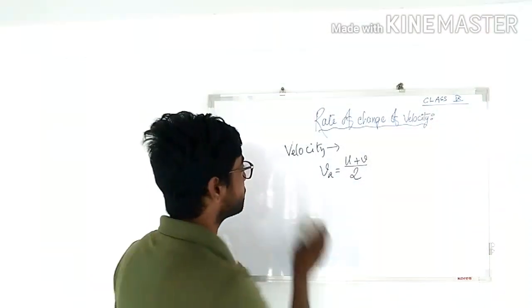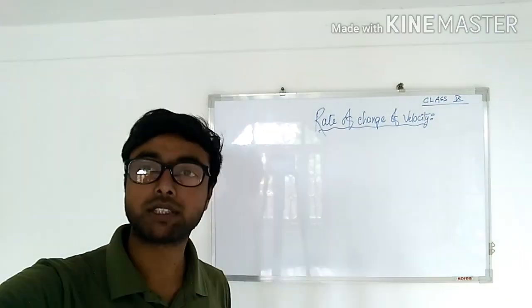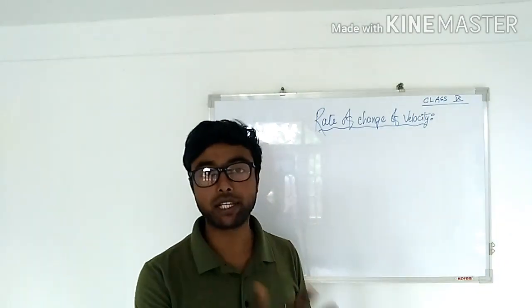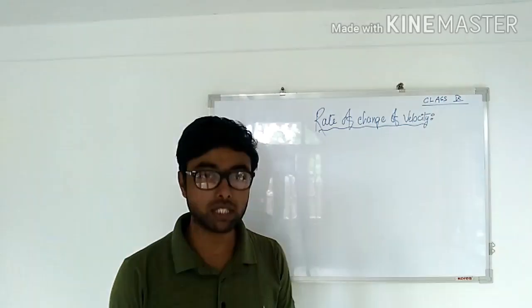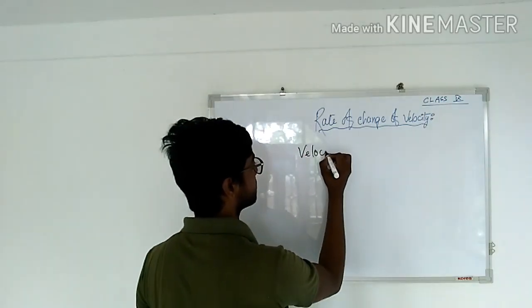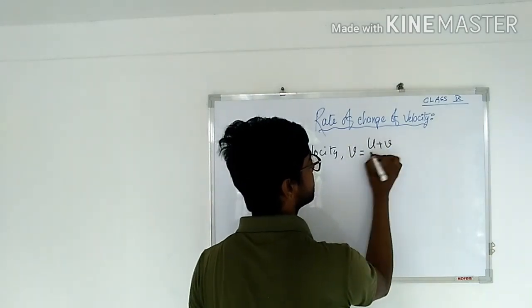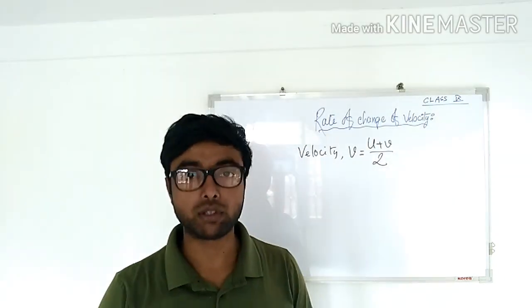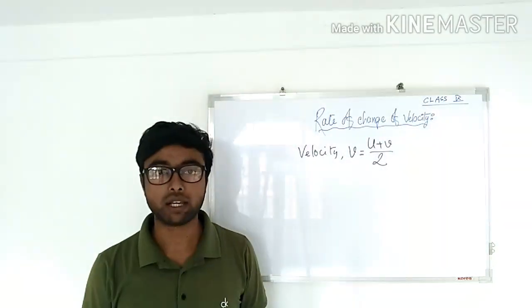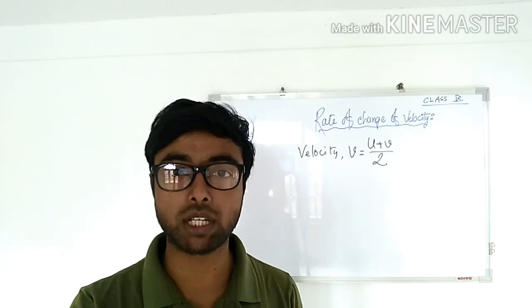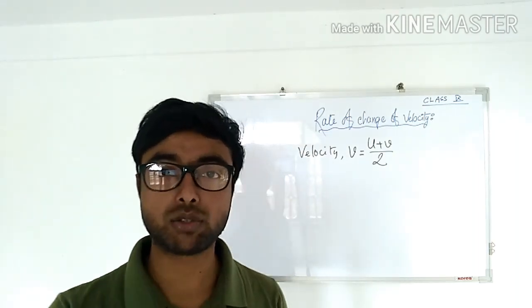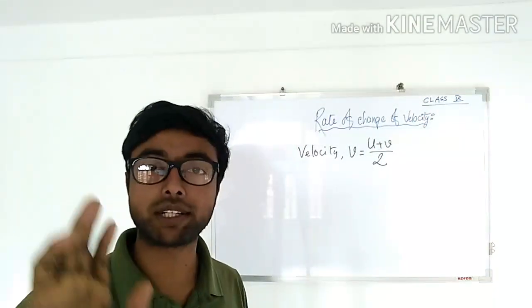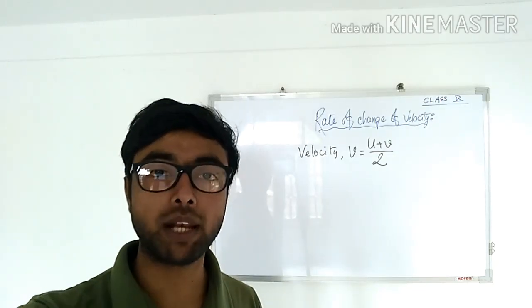Let's start our video today. The first topic is the rate of change of velocity. You know what velocity is — I have already explained in the previous video. Velocity v is equal to u plus v divided by 2, where u is the initial velocity and v is the final velocity. Now I'm going to tell you the concept of initial velocity and final velocity, and I'll give you one example to make it clear.